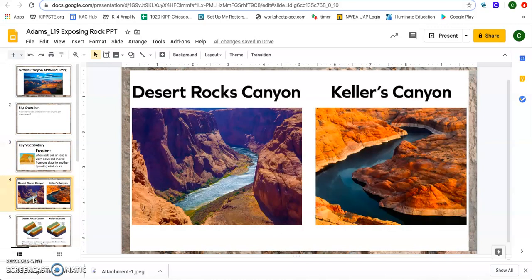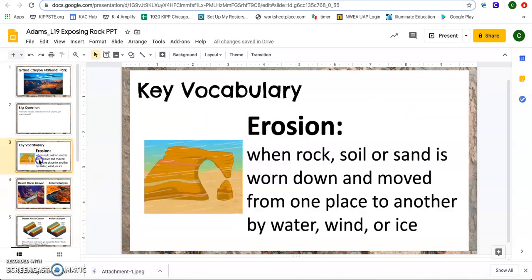So you're thinking about the word erosion again. And now you want to ask yourself, what's causing the erosion here? What's causing the erosion in both these canyons? You want to take about 10 to 15 seconds, and I'll display the vocabulary word again to think of that answer.